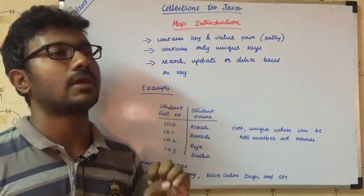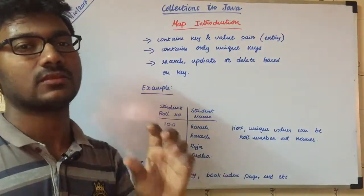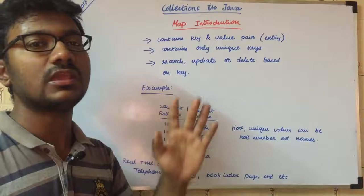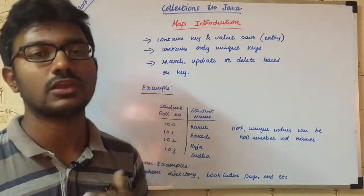The values in the Map are key plus value. The key always must be unique. Values need not be unique.